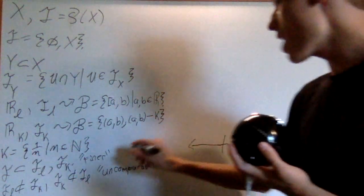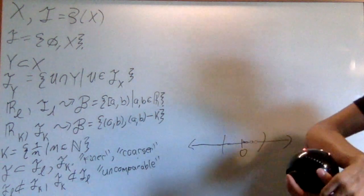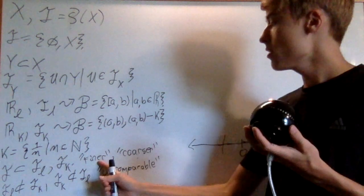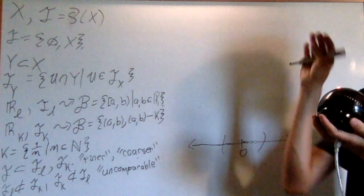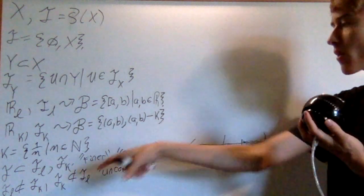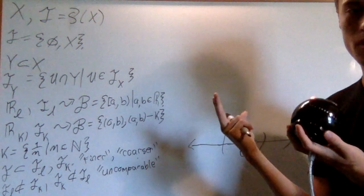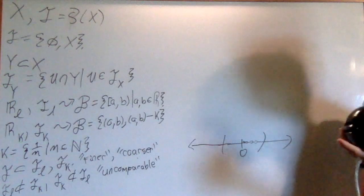And then the other way around is called coarser. This might seem a little backwards, but the way you should think about it is that finer means that you can get smaller sets. So you can get smaller and smaller sets, so it's more fine. And coarser means that the sets are larger and there are less of them. And uncomparable, of course, just means they can't be compared.